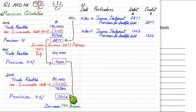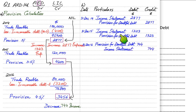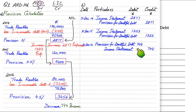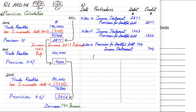We previously debited income statement; this time we credit income statement and debit the provision account. Why debit provision? Because provision is credit in nature. Provision is not a liability but behaves like one — it is something decreasing the value of an asset. If we need to decrease the provision account, we reverse it: debit provision account and credit income statement. Income statement is credited this time because it is income — income is always credit in nature. These are the journal entries for provision for doubtful debt.